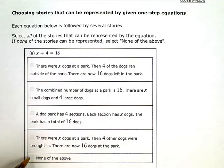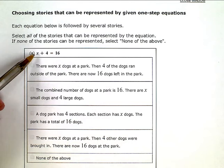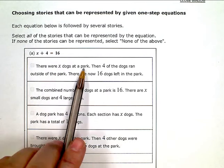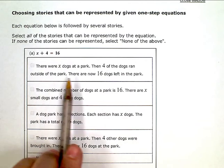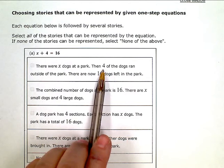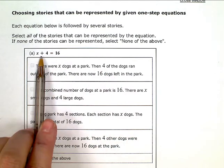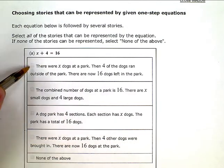Okay, our last option here. So my first equation is x plus 4 equals 16. I'm looking for different contexts that could be represented by the equation x plus 4 equals 16. The first one says there were x dogs at a park, then 4 of the dogs ran outside of the park. There are now 16 dogs left in the park. If 4 of the dogs left the park, that's a subtraction situation, right? Not addition. So this one is out. We can't mark that one.